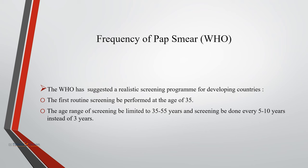According to WHO, the first routine screening is performed at the age of 35 years, with the age range of screening limited to 35 to 55 years, done every 5 to 10 years. HPV DNA testing may be added to cervical cytology for screening of women aged 30 years and older. Women with normal cytology and negative for HPV can be screened every 5 years, but women with normal cytology but positive for high-risk HPV DNA should have cervical cytology repeated every 6 to 12 months.